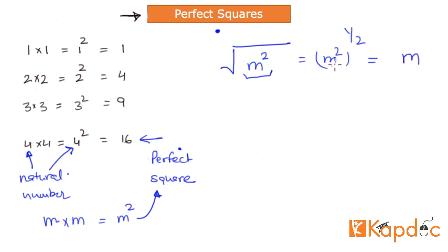Because m to the power 2 multiplied by one-half will be m itself. If m results into a natural number, then m squared, this whole number itself, is called a perfect square. So this is the definition of perfect square.